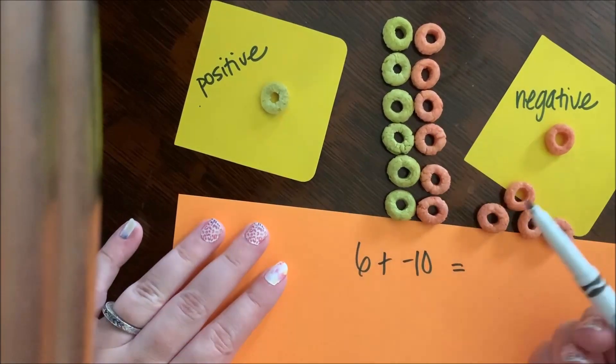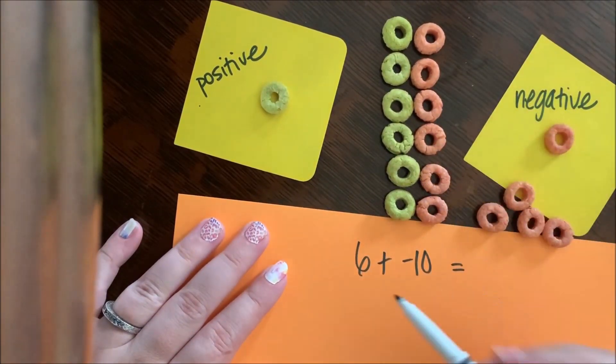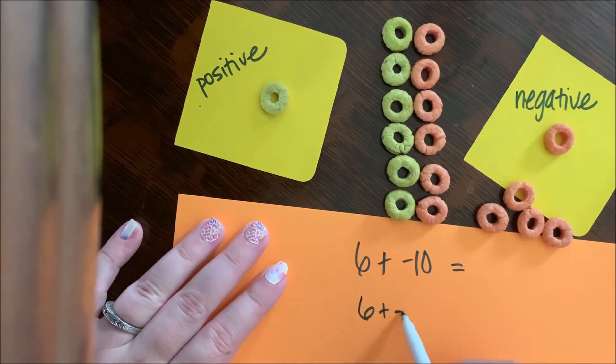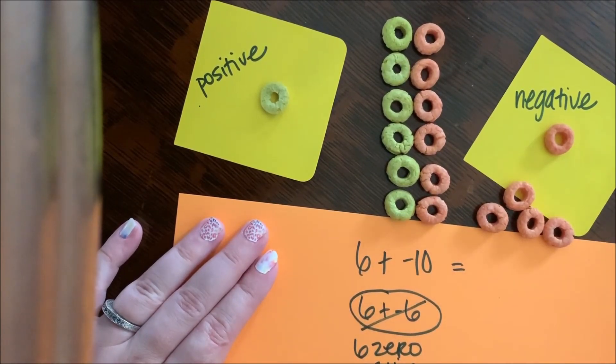So I made six zero pairs. Six plus negative six. There are six zero pairs.